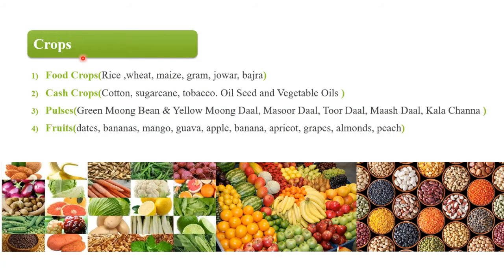Crops کو چار groups میں classify کرتے ہیں۔ Number one food crops — اس میں rice، wheat، maize، jowar، bajra وغیرہ شامل ہیں۔ Cash crops میں cotton، sugarcane، tobacco، oil seeds اور vegetable oils ہیں۔ Pulses میں green moong، beans، yellow moong، dal، masoor dal، mash dal، kala chana وغیرہ ہیں۔ Fruits میں dates، banana، mango، guava، apple وغیرہ شامل ہیں۔